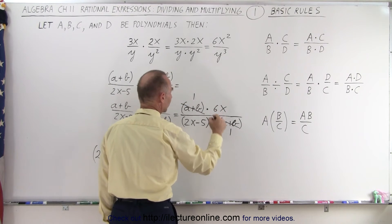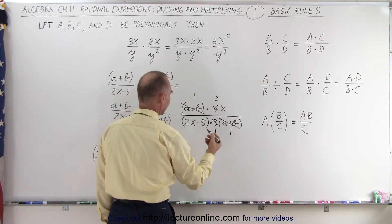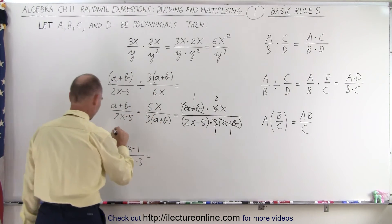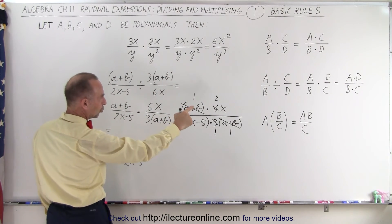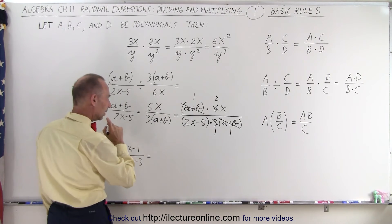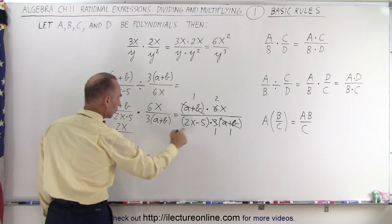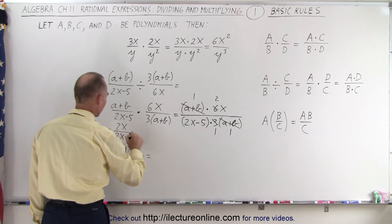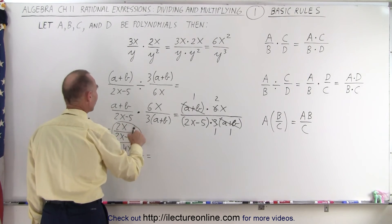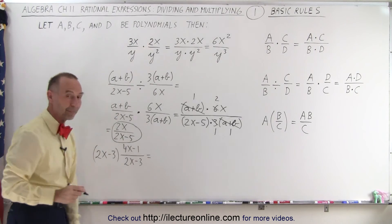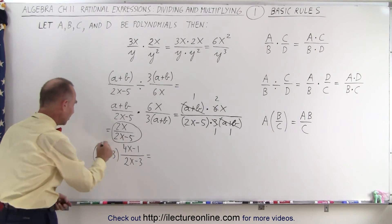The 3 and 6 reduce: the 3 becomes 1 and the 6 becomes 2. Then we can simply write this as 2x in the numerator and 2x minus 5 in the denominator. So this would be the simplified form of what we started with.